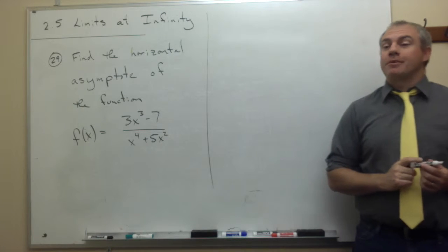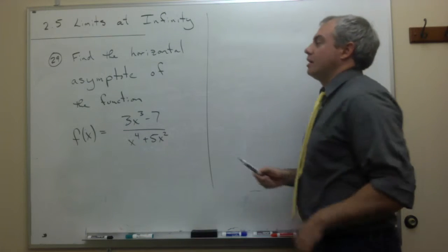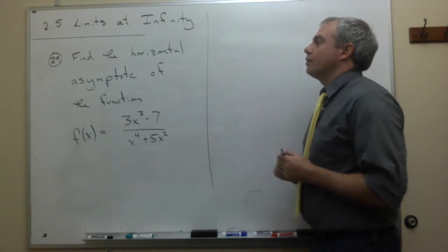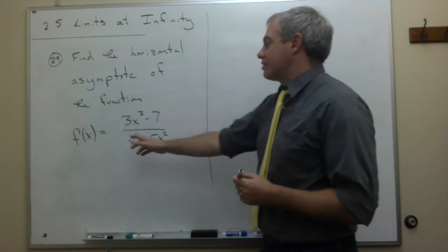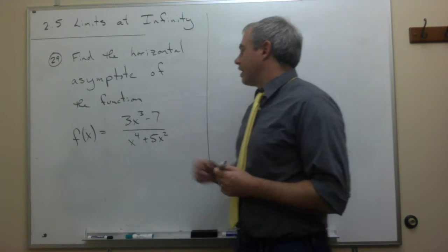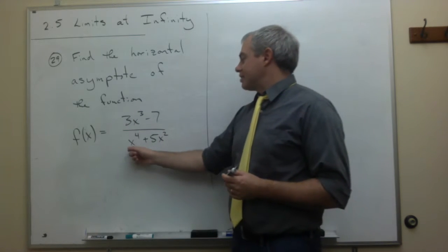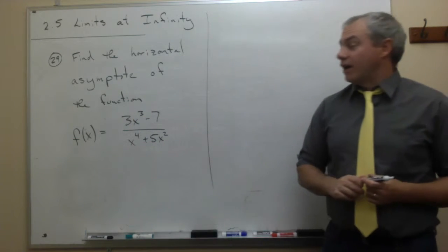Now, let's look at problem number 29. In problem 29, we want to find the horizontal asymptote of the function f of x is equal to 3x cubed minus 7 divided by x to the fourth plus 5x squared.